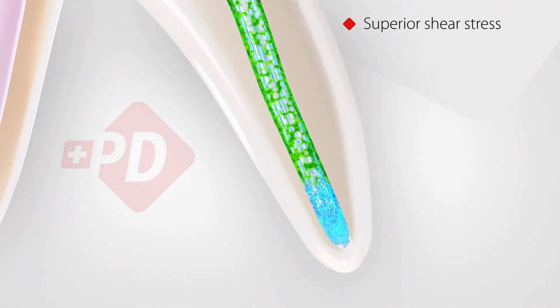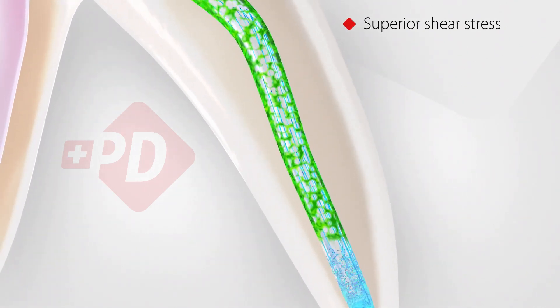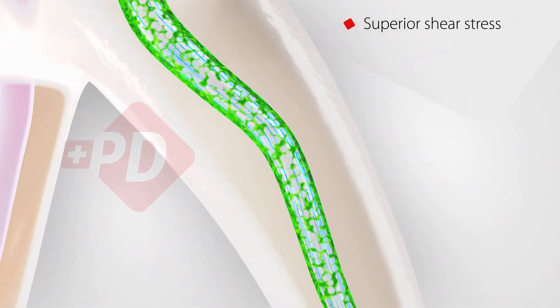Unlike conventional metal needles, the higher solution flow rate and the reduced space around the needle significantly increase the wall shear stress along the root canal. The superior shear stress improves the cleaning efficacy and mechanically removes more residues such as debris, smear layer and biofilm from the root canal walls.